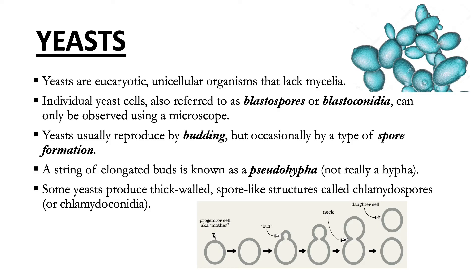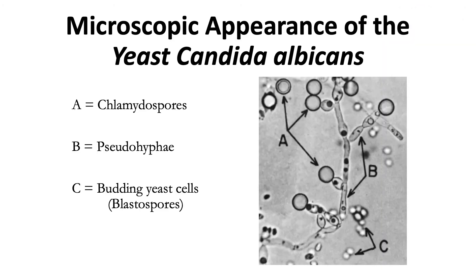Yeast are eukaryotic single-celled organisms that lack mycelia. Individual yeast cells, sometimes referred to as blastospores or blastoconidia, can only be observed through a microscope. They usually reproduce by budding but occasionally do so by spore formation. Sometimes a string of elongated bodies forms, called a pseudohypha — it resembles a hypha but is not a true hypha. Some yeast produce thick-walled, spore-like structures called chlamydospores or chlamydoconidia.